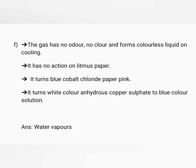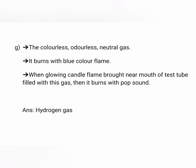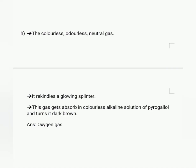The gas with no odor and no color that forms a colorless liquid on cooling, has no action on litmus paper, and turns blue cobalt chloride paper pink. Answer: water vapor. The colorless, odorless, neutral gas which burns with a blue flame and when a glowing candle flame is brought near a test tube containing this gas gives a pop sound. Answer: hydrogen gas. The colorless, odorless, neutral gas which rekindles a glowing splinter. Answer: oxygen gas.